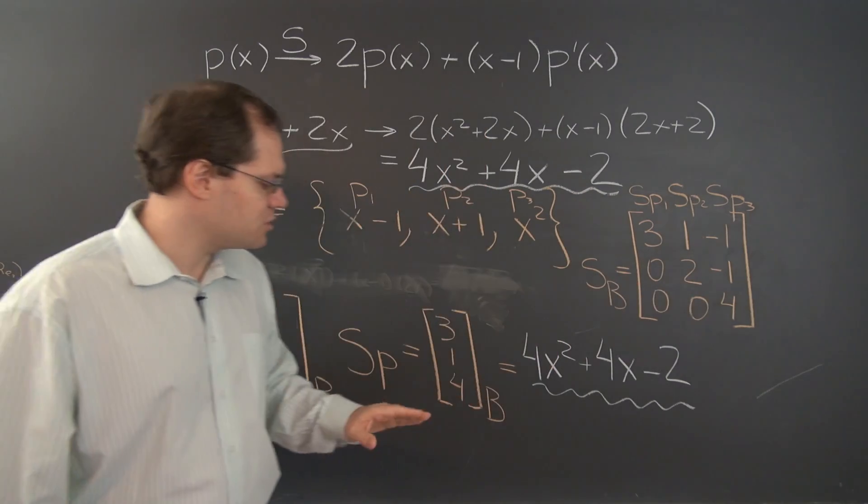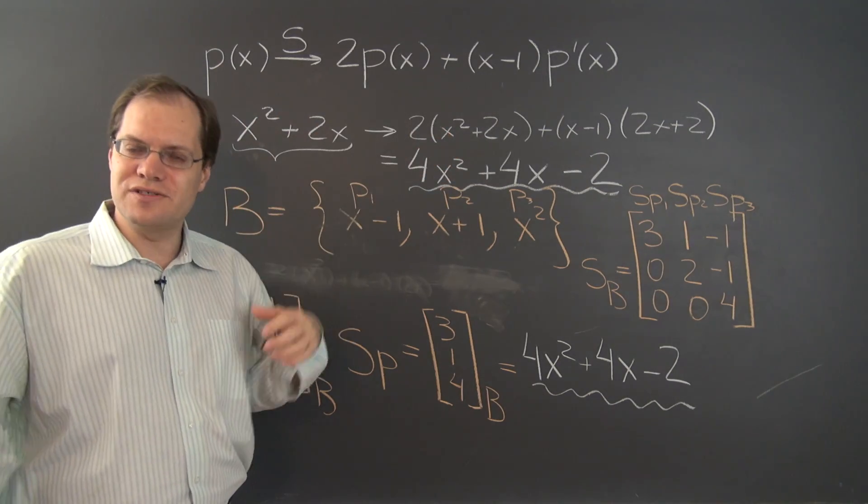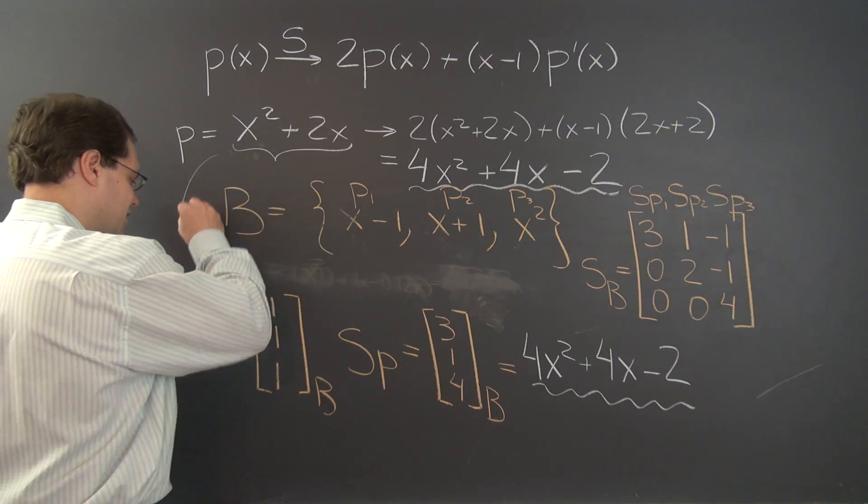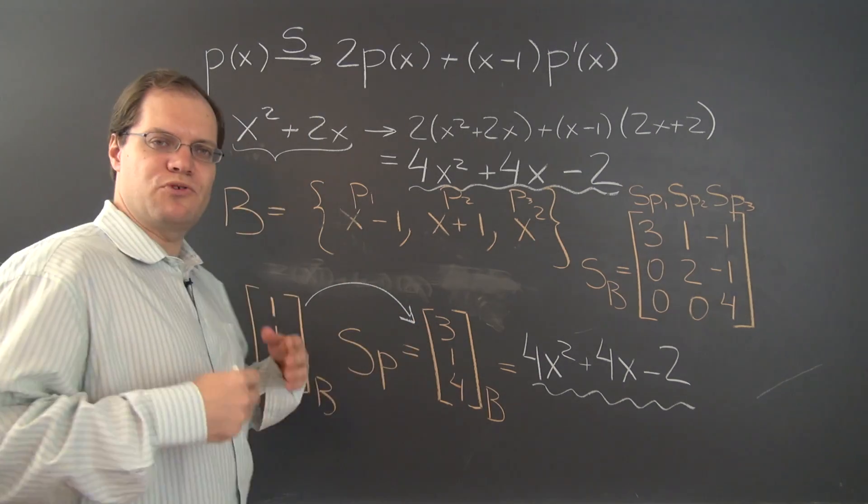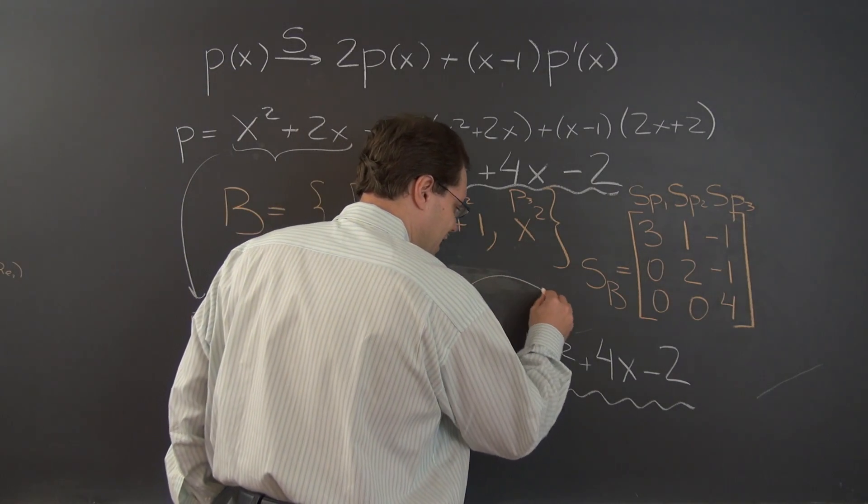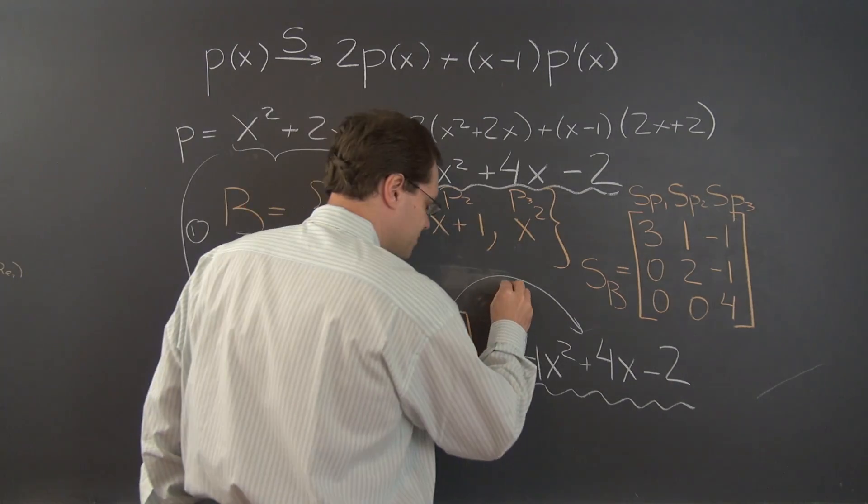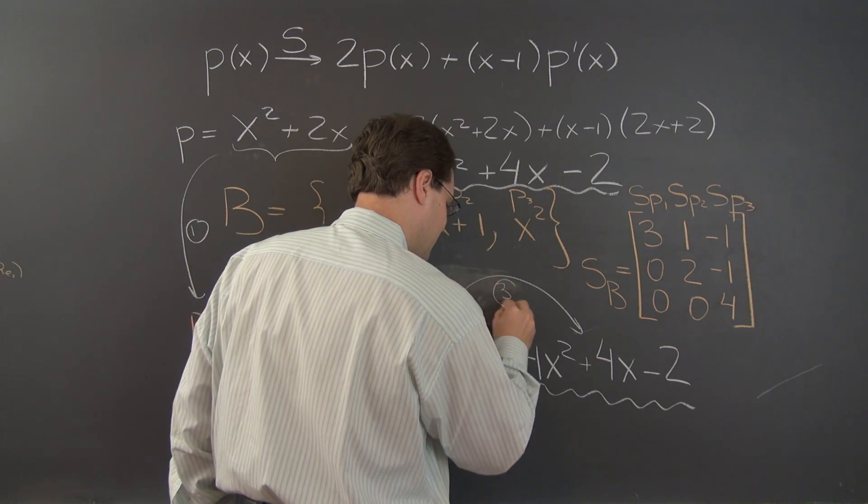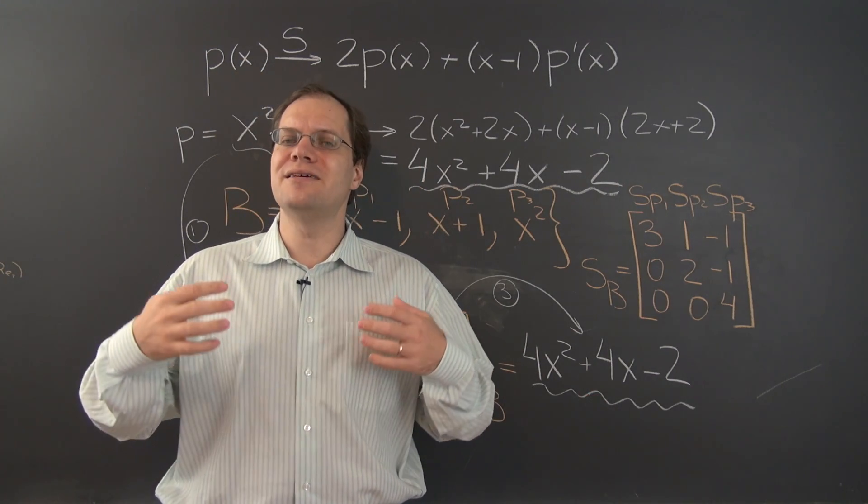And then just to make sure one more time that it works, we took our original polynomial, which we used to experience this linear transformation, decomposed it with respect to the same basis. So we made the trip into the component space. Then applied step number two, which is performing the linear transformation in the component space. And finally, came out of the component space into the real world, completing the component space journey. And lo and behold, got the exact same answer, convincing us one more time that this algorithm works.